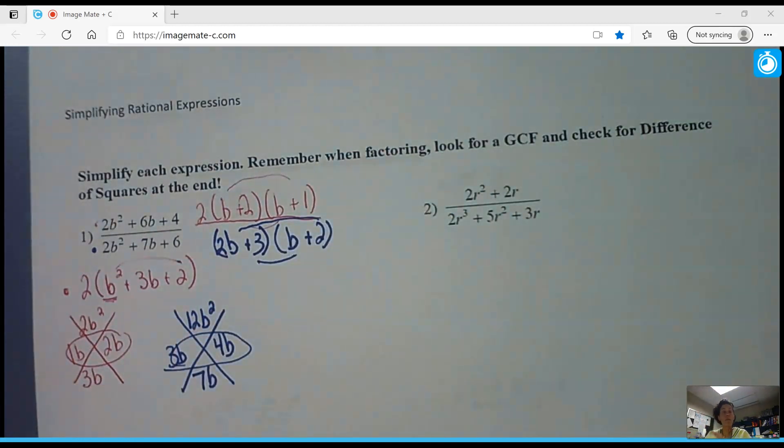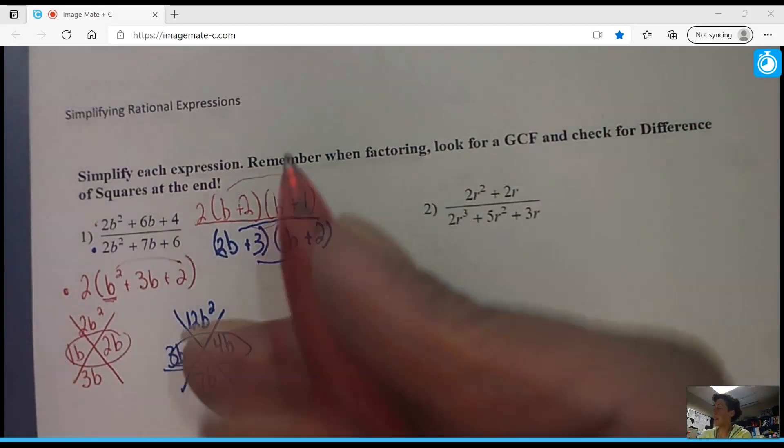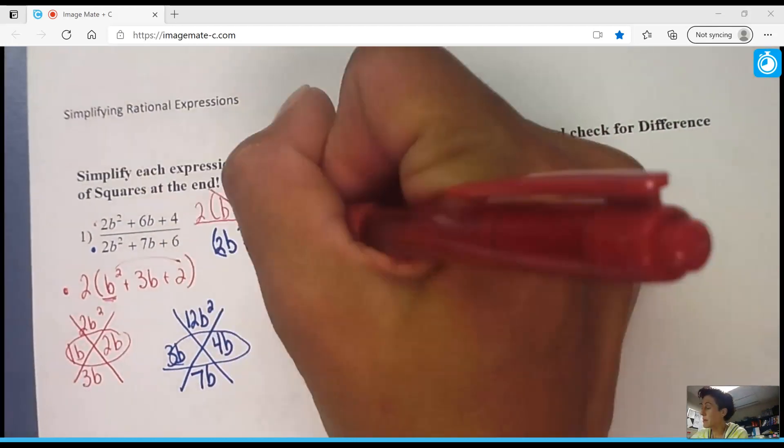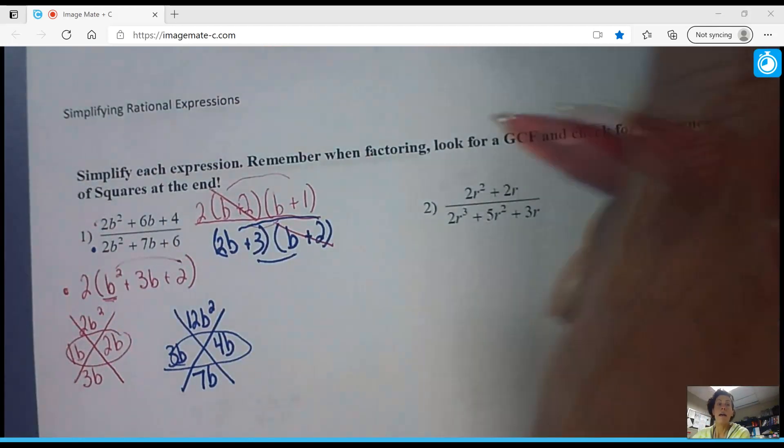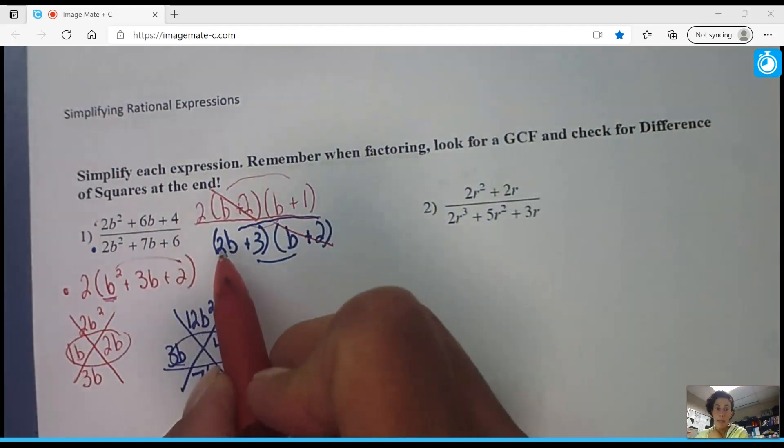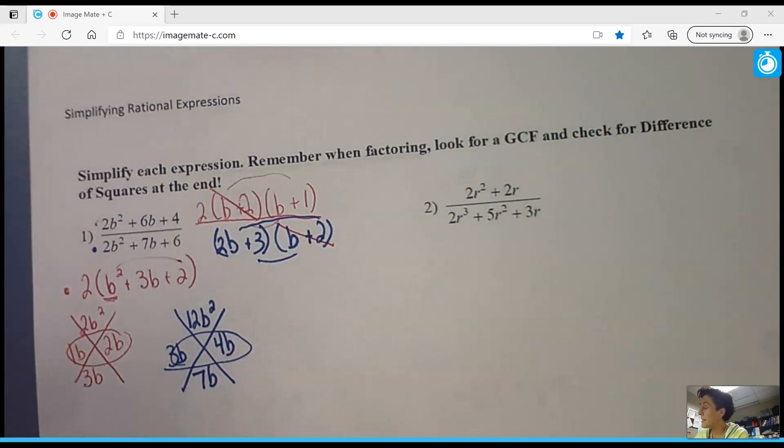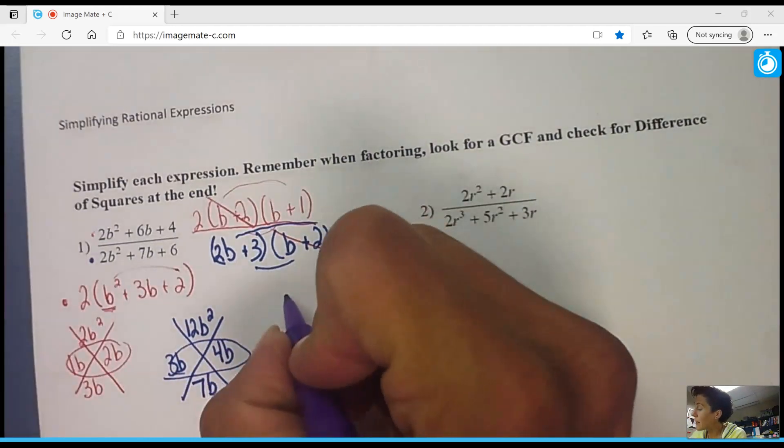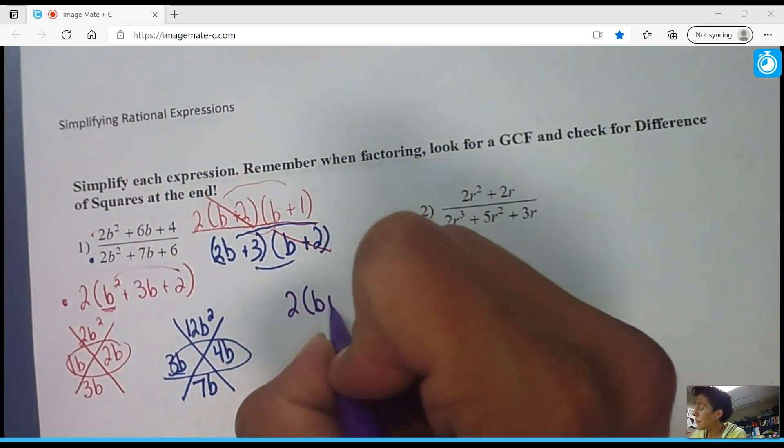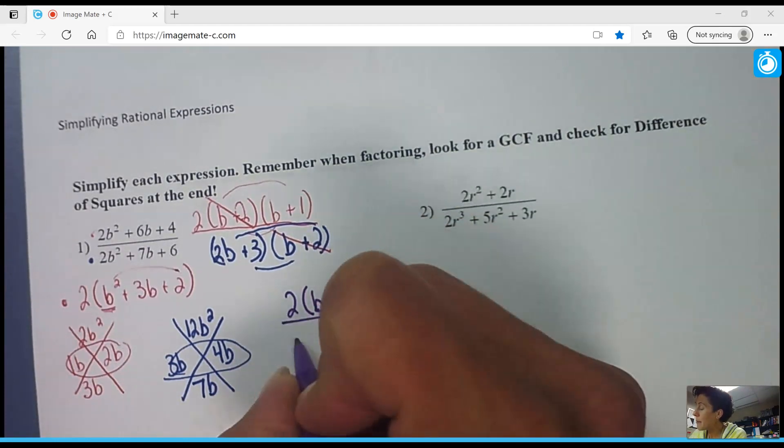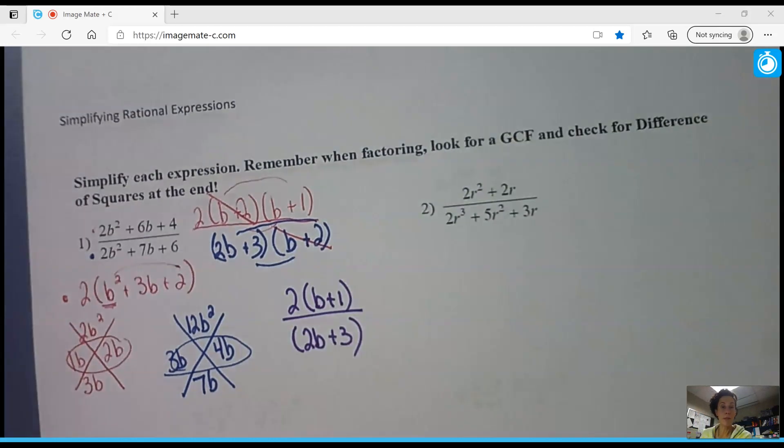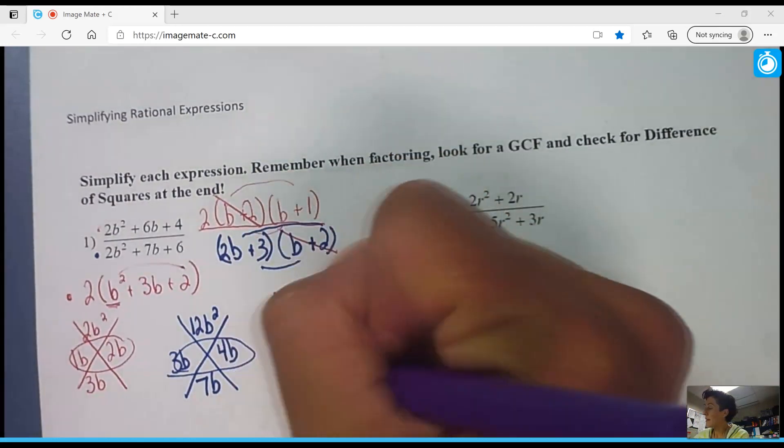So now that it's completely factored, I will look for the common factor between my numerator and the denominator. That's going to be the b plus 2 and the b plus 2. This 2 will not be taken out by this 2 because then you're breaking up a term, and you're not going to do that. If it's in parentheses, it all goes or none of it goes. So when we're done, our final answer: we have a 2 and a b plus 1 in the numerator, and in the denominator we are left with 2b plus 3. Problem 1 is done.